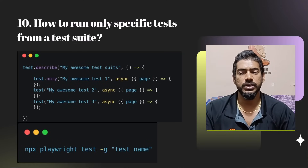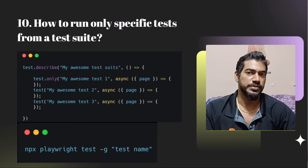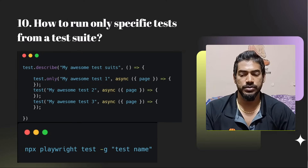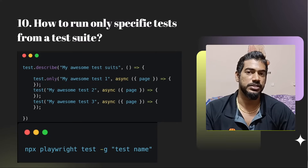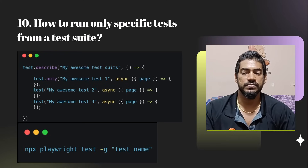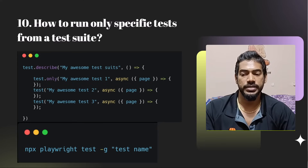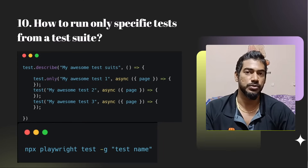How to run a specific test from a test suite? We have two options. First, the grep command: npx playwright test -g where you give the specific test name. Second, if you have a test suite with test.describe containing multiple tests, you can mark any particular test or tests with test.only, which will run only those tests.